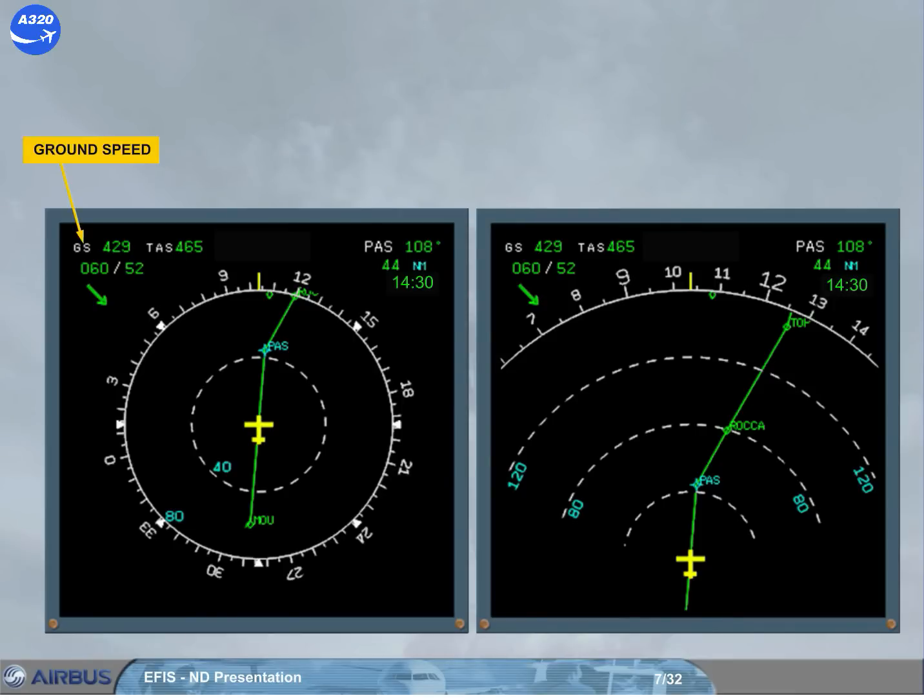The ground speed, GS, and the true air speed, TAS, are permanently displayed on the top left corner. Below the speed indications is the wind data: wind direction, true north, wind speed, and an arrow to indicate the wind direction with respect to magnetic north.